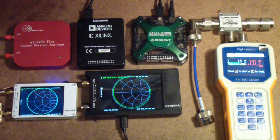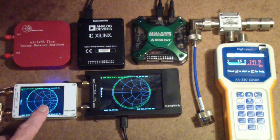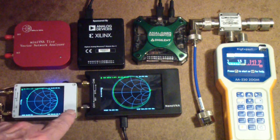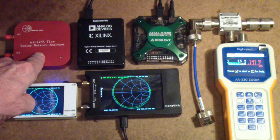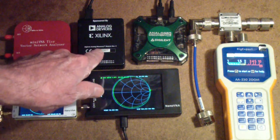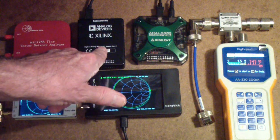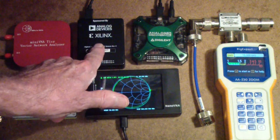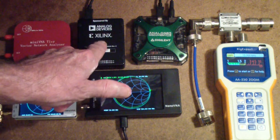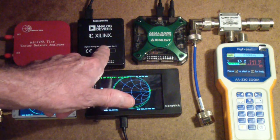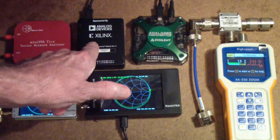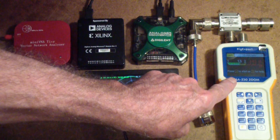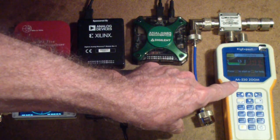So what do we have here? Well, down here we have the nano VNA H, next to it is the nano VNA H4. I have done videos on each of these. Up here is the mini VNA tiny, I've done videos on it. Next to it is the Analog Devices Analog Discovery, next to it is the Analog Discovery 2.